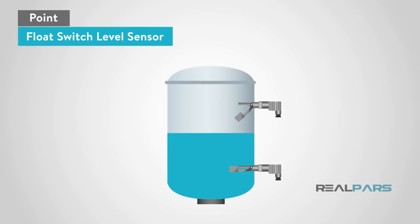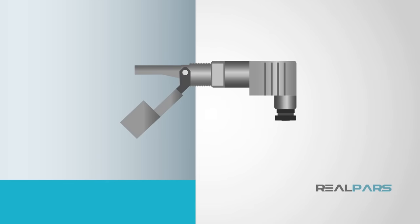The last point level sensor that we will talk about is a float switch. Float switches use a float, a device that will raise or lower when a product is applied or removed, which will open or close a circuit as the level raises or lowers moving the float.